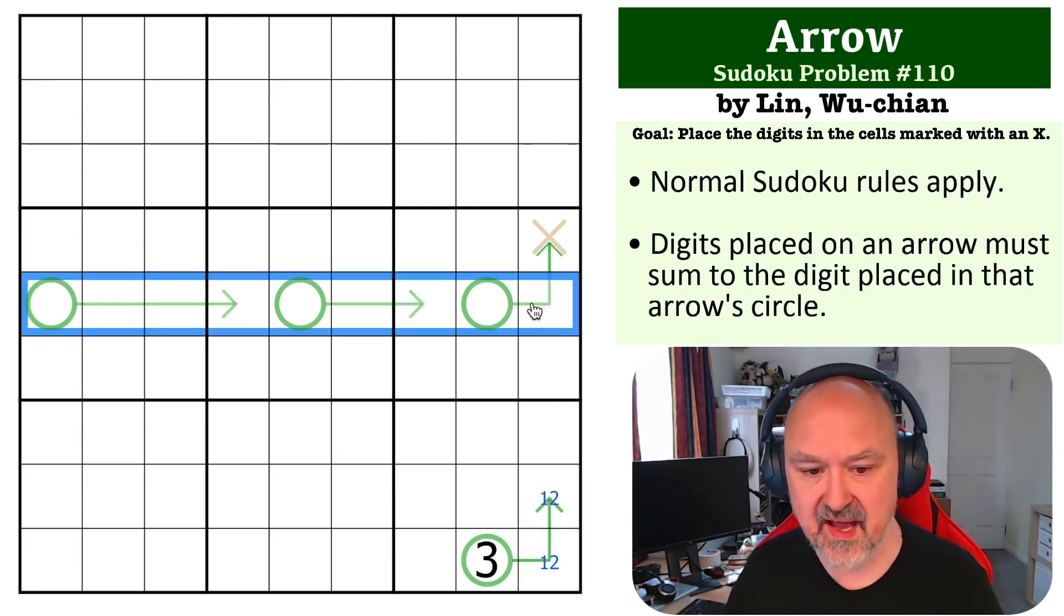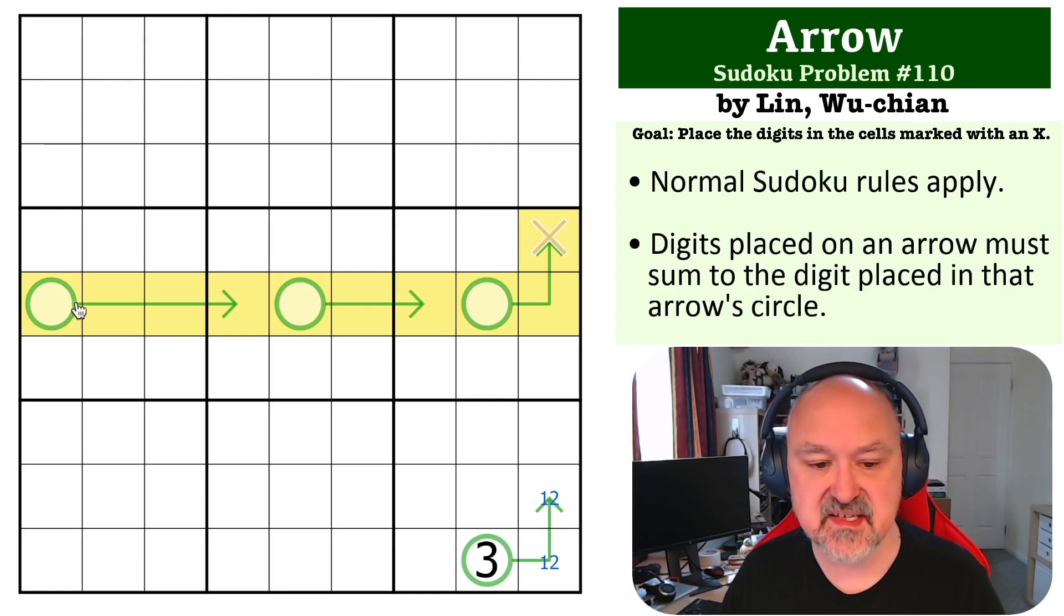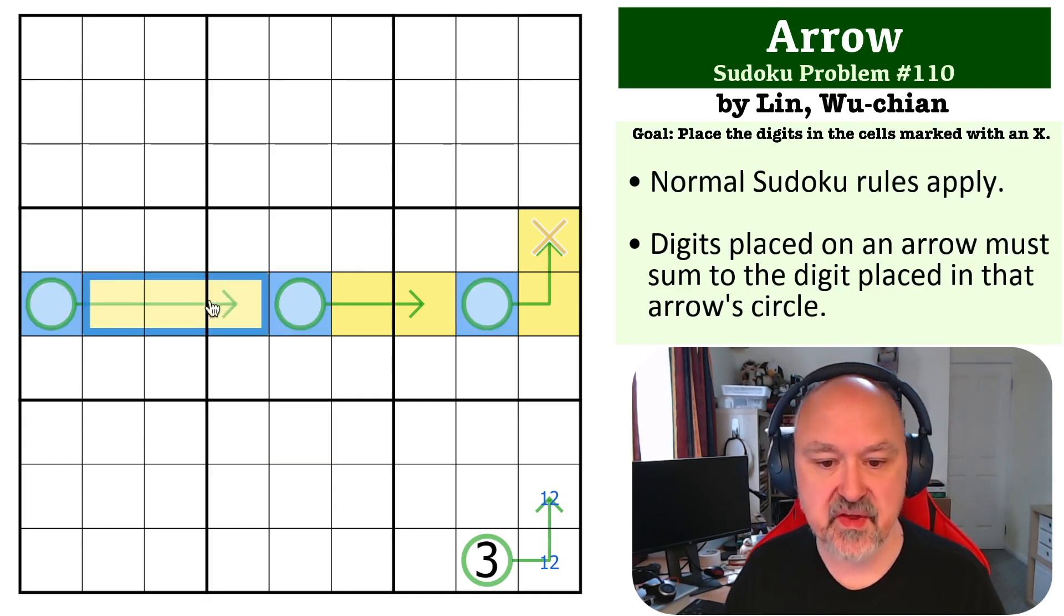Now we want to look at these cells. With those cells, this is the sum of those three digits times 2, because let's mark those a different color. Let's mark those blue. So we know that yellow contains the sum of yellow is the same as the sum of blue, because the sum of those is this, the sum of those is this, and the sum of those is this.